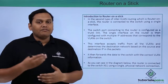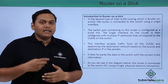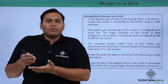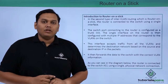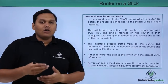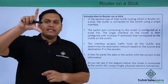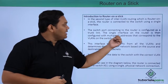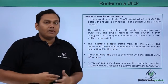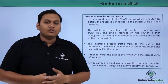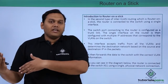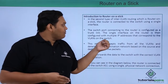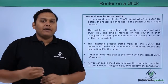Router on a stick is the second type of inter-VLAN routing. The router is connected to the switch using a single interface. The switch port connecting to the router is configured as a trunk link, so only a single interface is connected to the switch via a trunk link. The single interface on the router is then configured with multiple IP addresses that correspond to the VLANs on the switch. For the multiple VLANs, a trunk link is used and multiple IP addresses are configured.